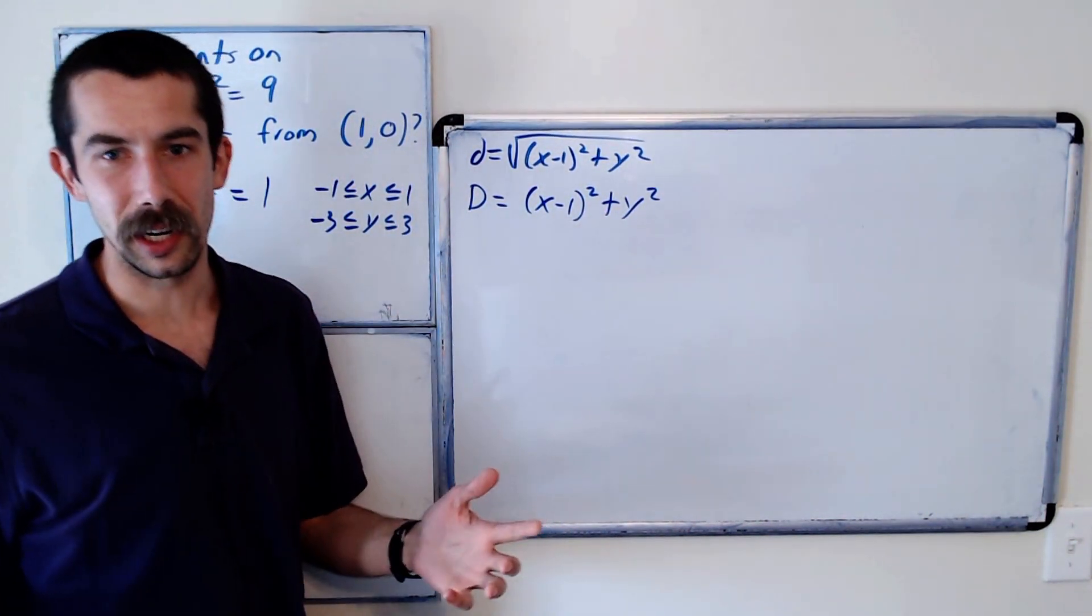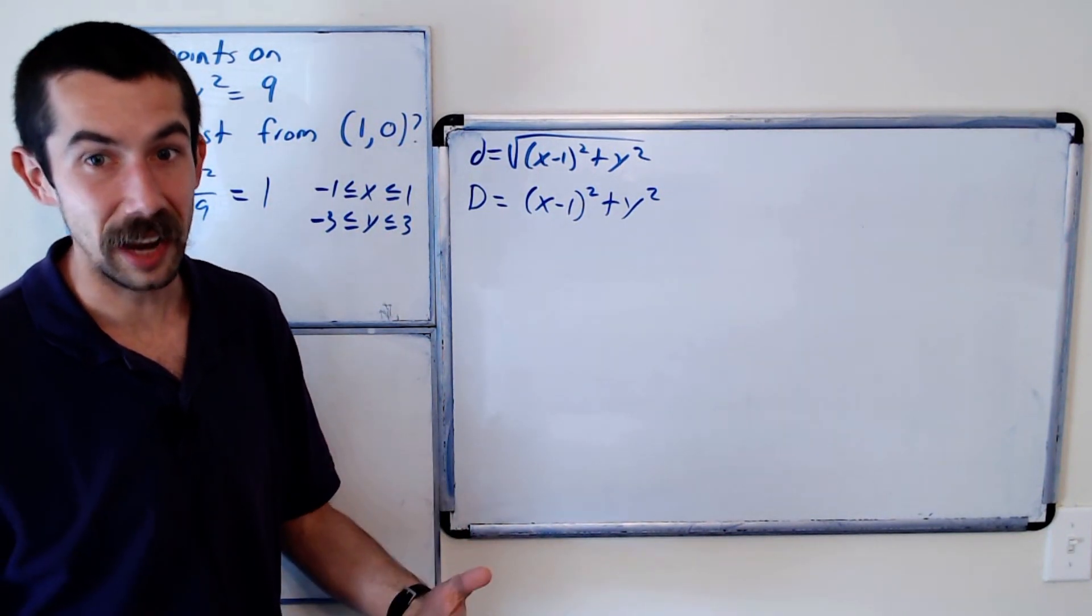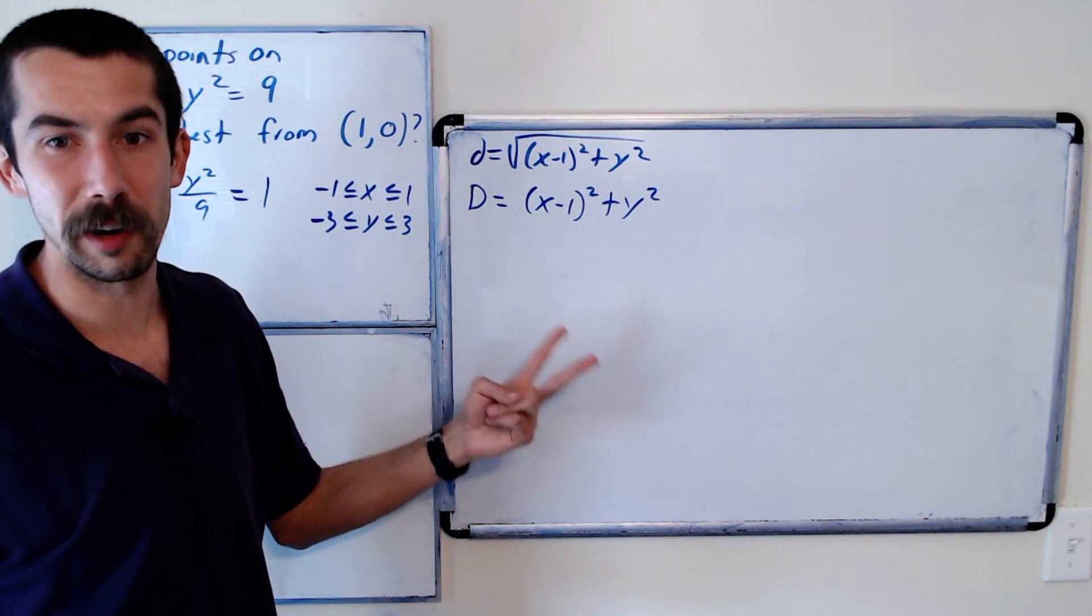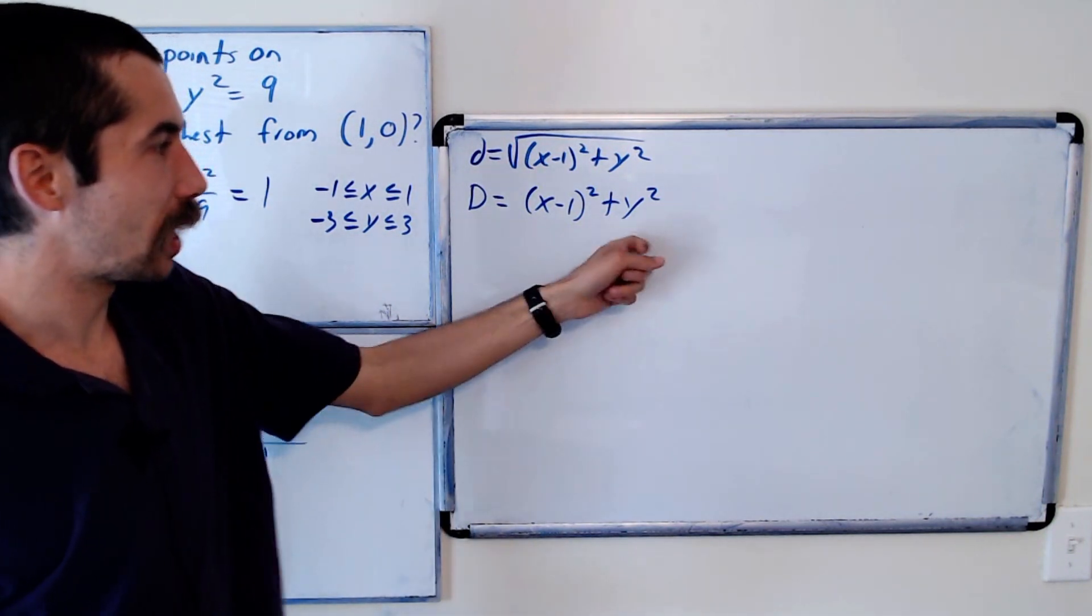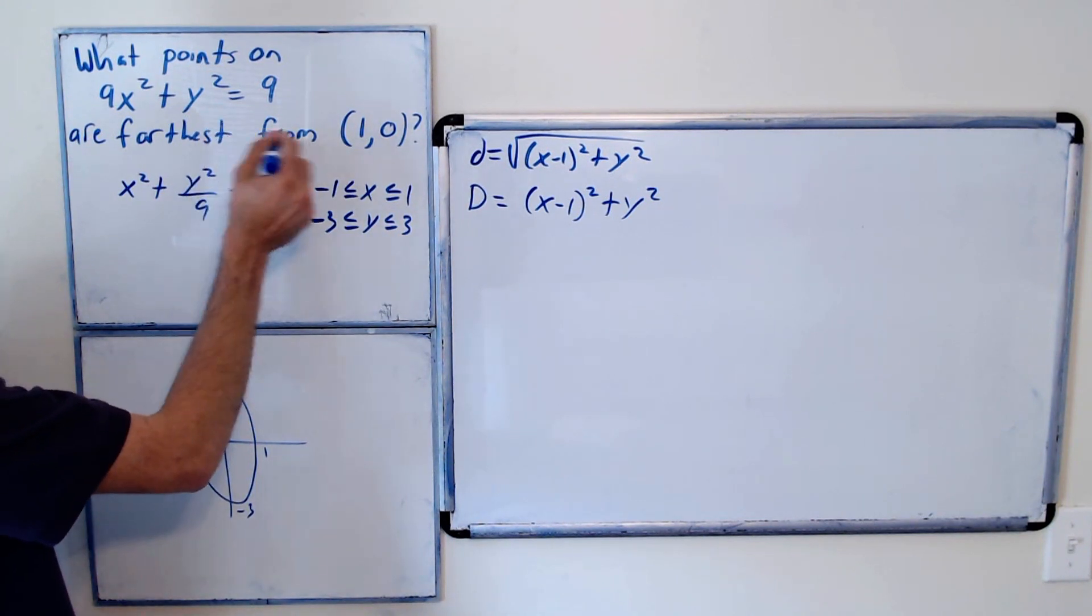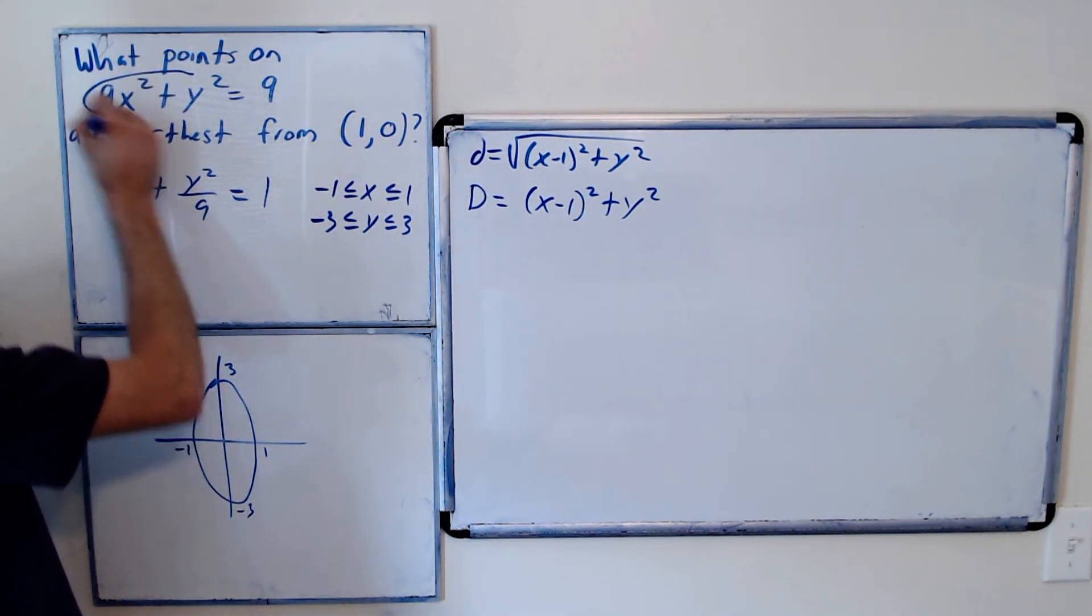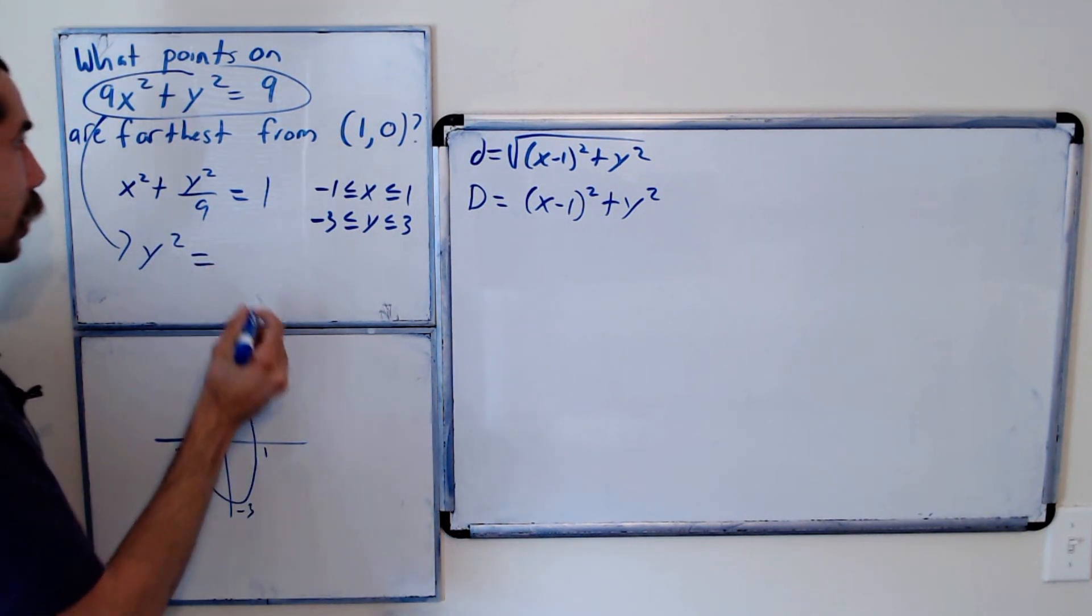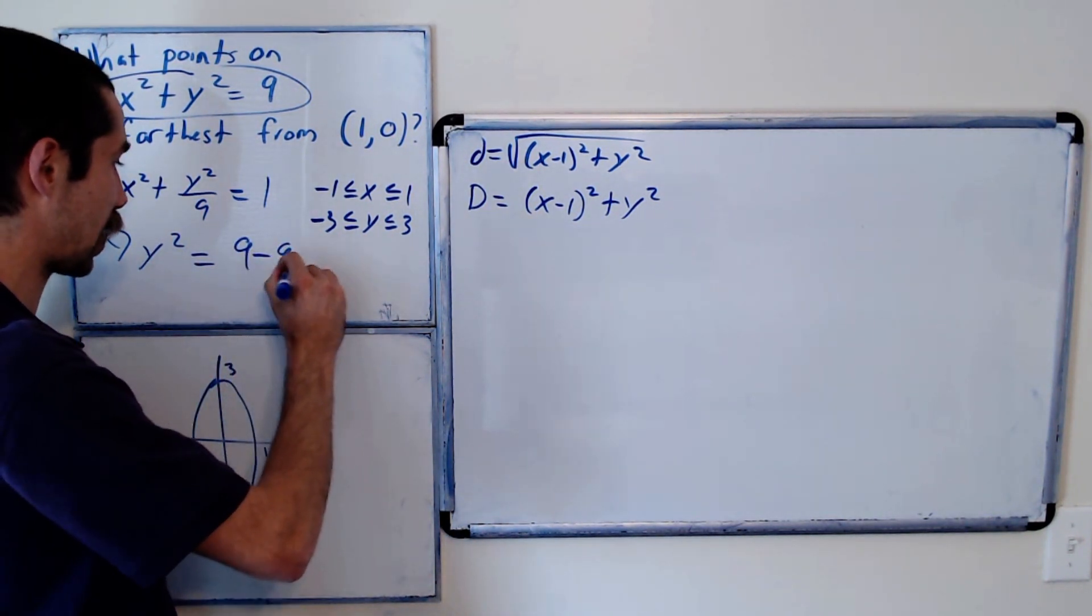If you're watching this video, you probably haven't taken calc 3 yet, so we don't know how to maximize a two variable function. We have to eliminate a variable. We could solve for y squared and we get y squared equals 9 minus 9x squared.